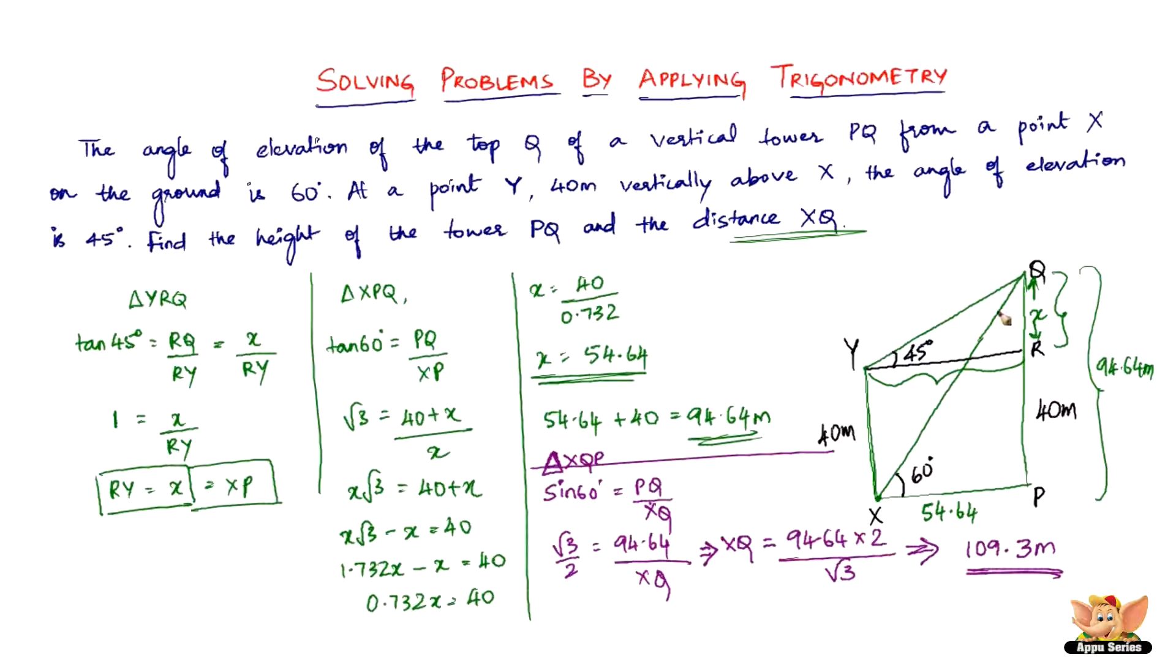So the distance XQ is nothing but 109.3 meters. So that's all. All you have to do is use your trigonometry. That's what we've done. We've just used the concept of right angle triangles, Pythagoras theorem, from which we get trigonometry. So all you have to do is use as many right angles as you can in the given figure. First, convert the question into a diagram, and then just proceed. And here we are, 109.3 meters. So I'll see you in the forthcoming videos with more math.